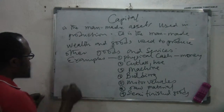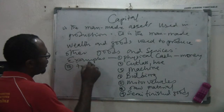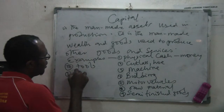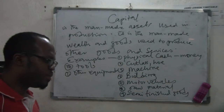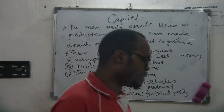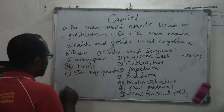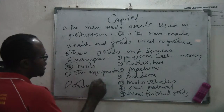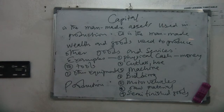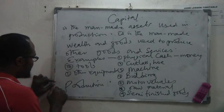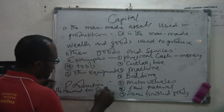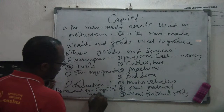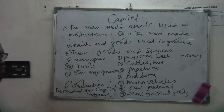Then we talk about tools and other equipment — all the tools and equipment you use in work are classified under capital. All of these things used in the production of goods and services are known as capital. And the reward for capital is interest — the reward for capital is interest. Very, very important.